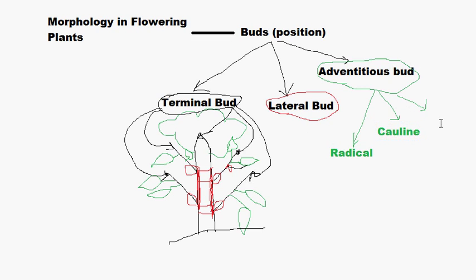The last one is the foliar adventitious bud, which refers to adventitious buds that can develop from the leaf. As an example, in the Bryophyllum plant, epiphyllous buds appear, and these buds can be called adventitious buds — or more specifically, foliar adventitious buds. So that was the classification of adventitious buds.